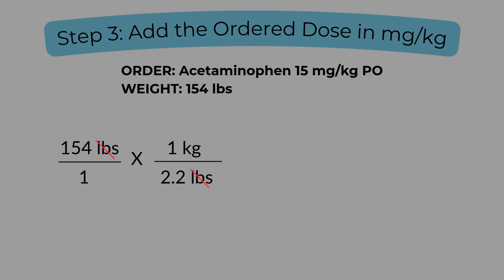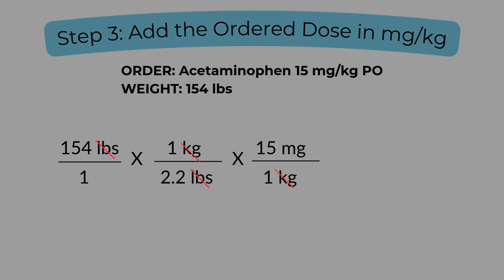Let's move on to step three: add the ordered dose. Once you've converted pounds to kilograms, we can now bring in the actual medication dose. The order was for 15 milligrams per kilogram, so we multiply by 15 milligrams over one kilogram. Notice how the kilogram units cancel out, just like the pounds did earlier. Canceling tells you that you've applied the conversion correctly and are moving towards the unit you need. Right now we're sitting in milligrams — that's progress, but we don't give milligrams. Let's take it one more step.